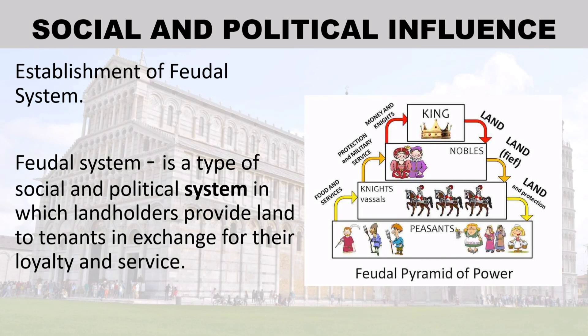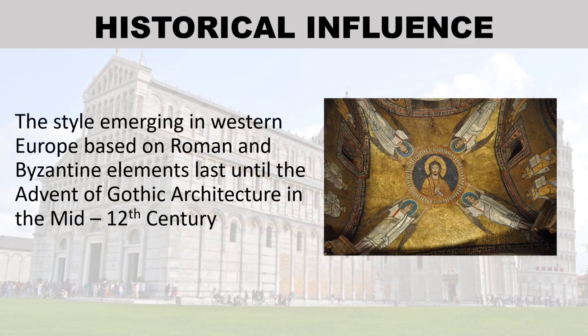Social and political influence: Establishment of the feudal system. The feudal system is a type of social and political system in which landholders provide land to tenants in exchange for their loyalty and service. Historical influence: The style emerging in Western Europe, based on Roman and Byzantine elements, lasted until the advent of Gothic architecture in the mid-12th century.